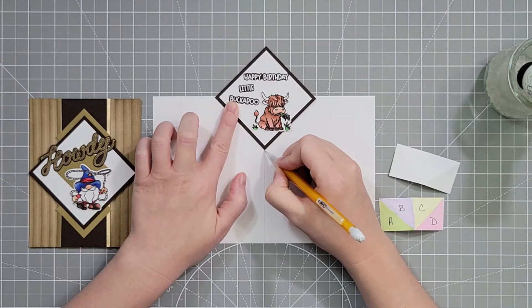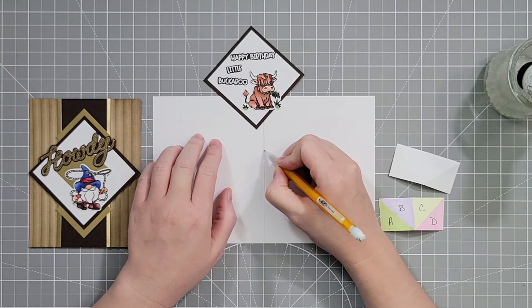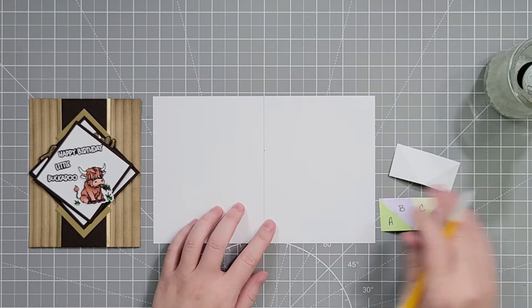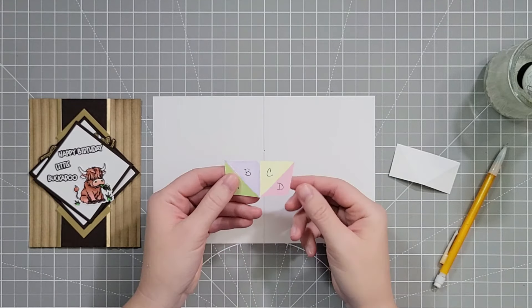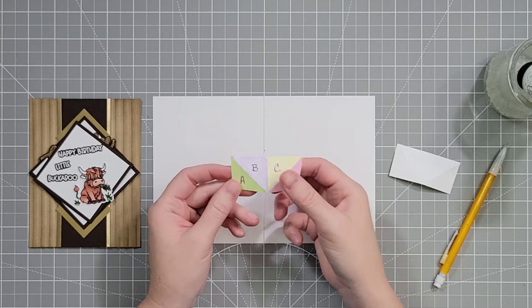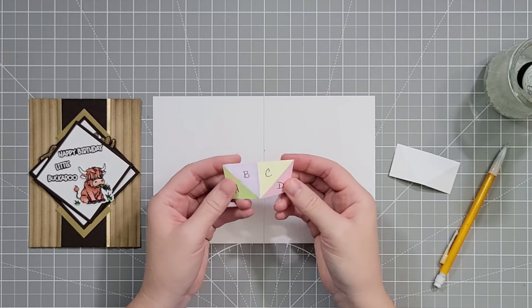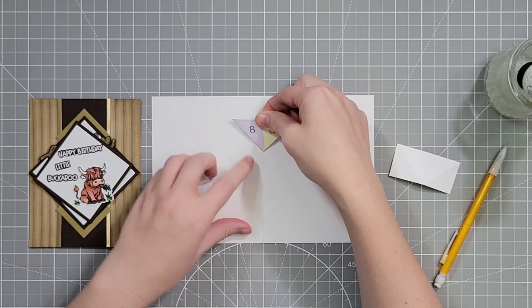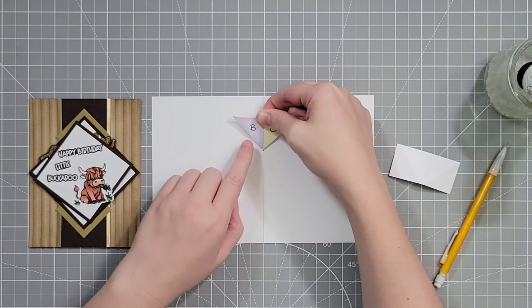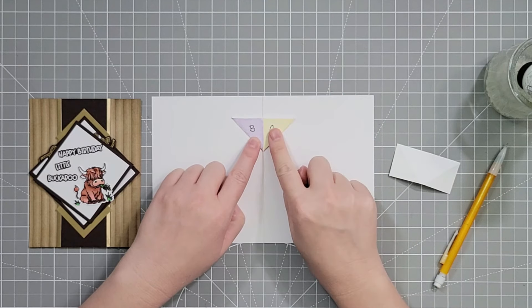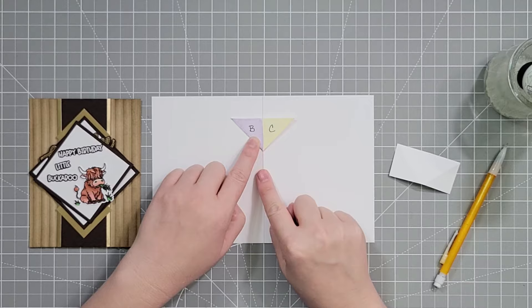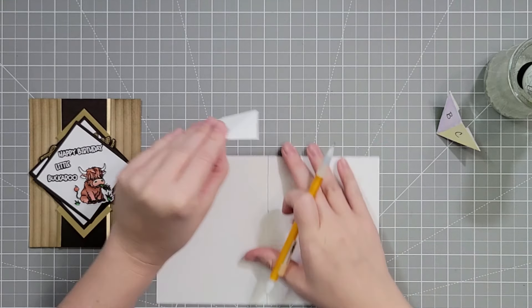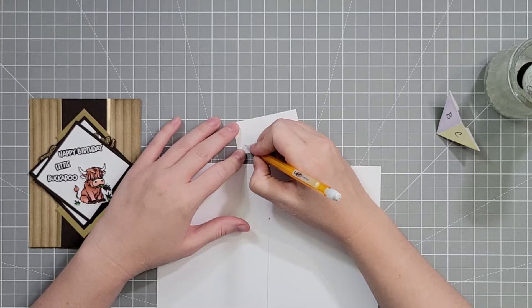I'm using my pencil to make a mark right where that bottom corner met the score line in the center of the card. Here's a color-coded version of the mechanism. All of these score lines get folded as mountain folds, and then you tuck A and D back behind it. We're going to line up the bottom corner right on that pencil mark and make sure that the score line of the mechanism lines up with the score line of the card.